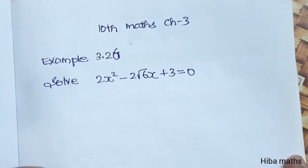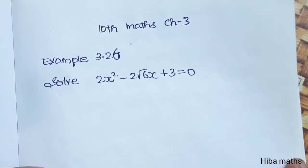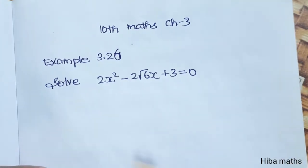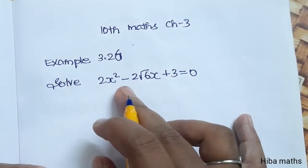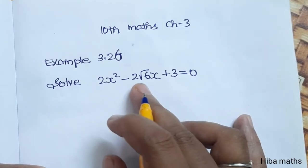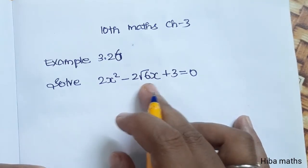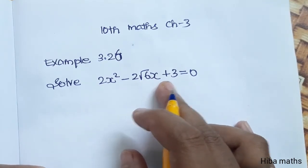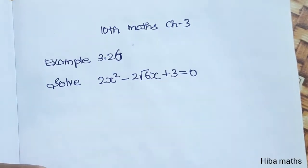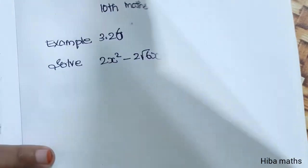Hello students, welcome to Hibamax 10th Standard Max Chapter 3, Example 3.26. Solve 2x² - 2√6x + 3 = 0.